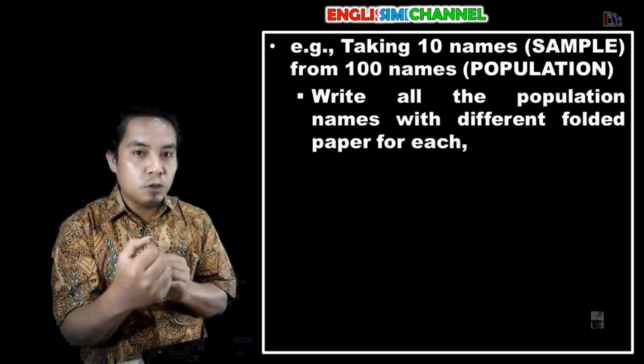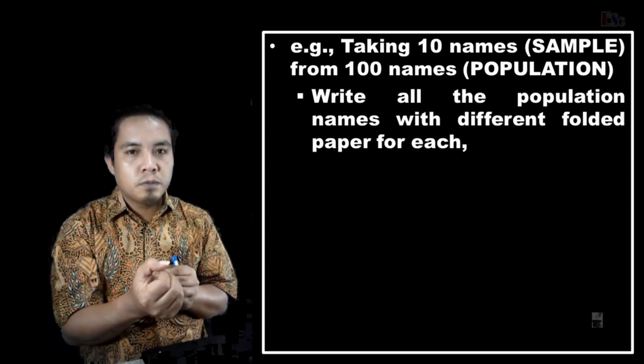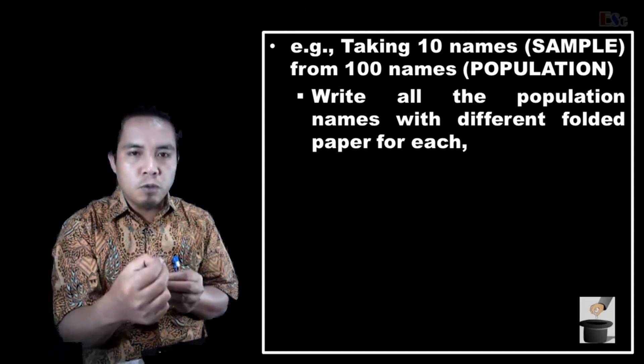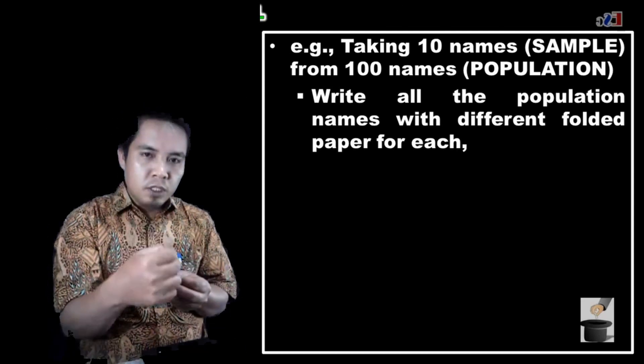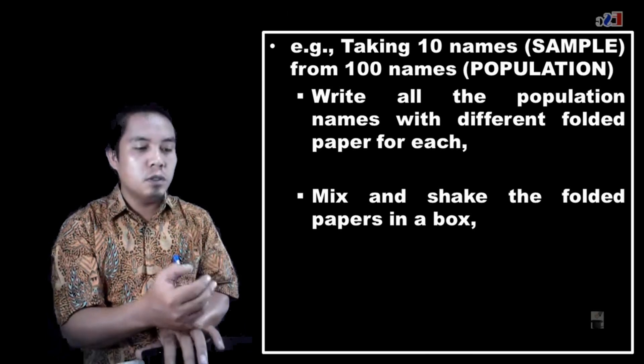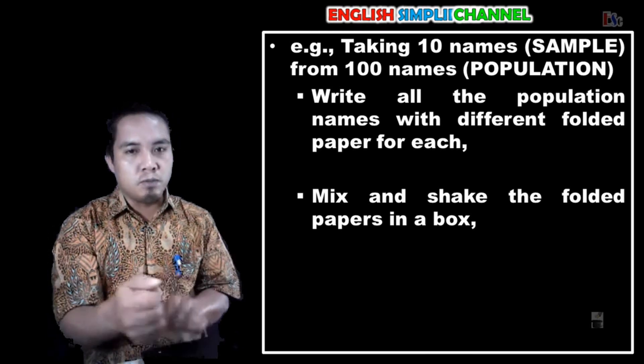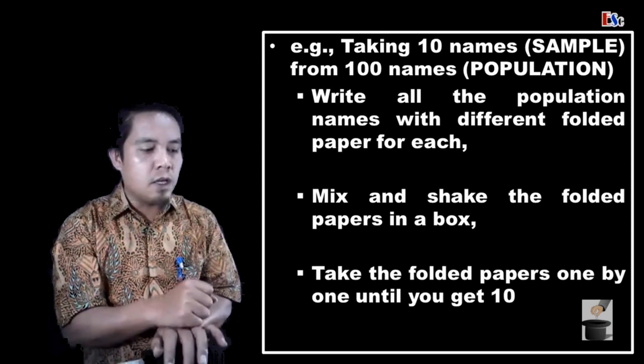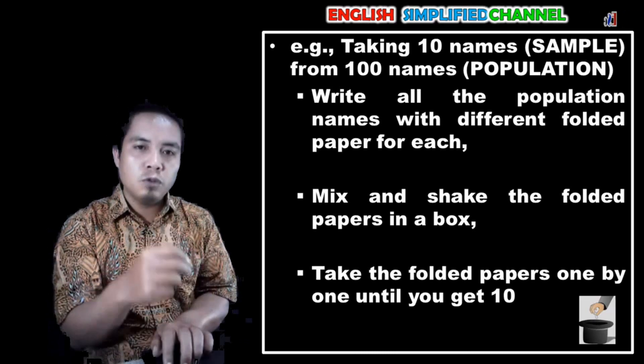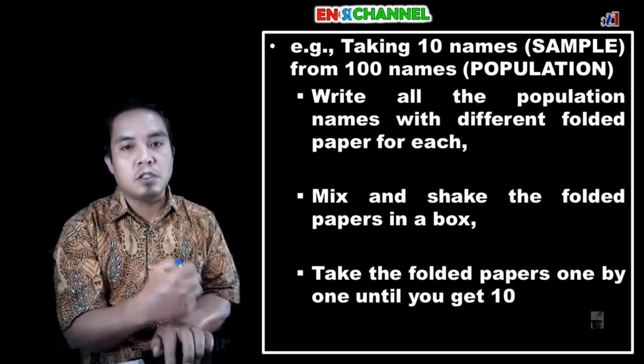Get it? What I mean? 100 population, so we need to write all the names of the population and put it in a folded paper. After that, we continue: mix and shake the folded papers in a box or container. We shake it first, and we take one, two, three, and so on until we have 10 samples.